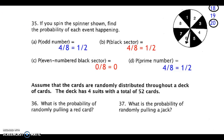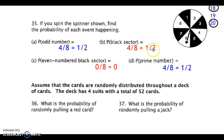Here are your answers for the spinner problems. The probability of an odd number — we looked at 1, 3, 5, and 7 — gives 1 out of 2. Black sectors: there were 4 black sectors out of 8 possible, so that's 1 out of 2 again. An even-numbered black sector — all the black sectors have odd numbers — so the probability is 0 out of 8, or 0.